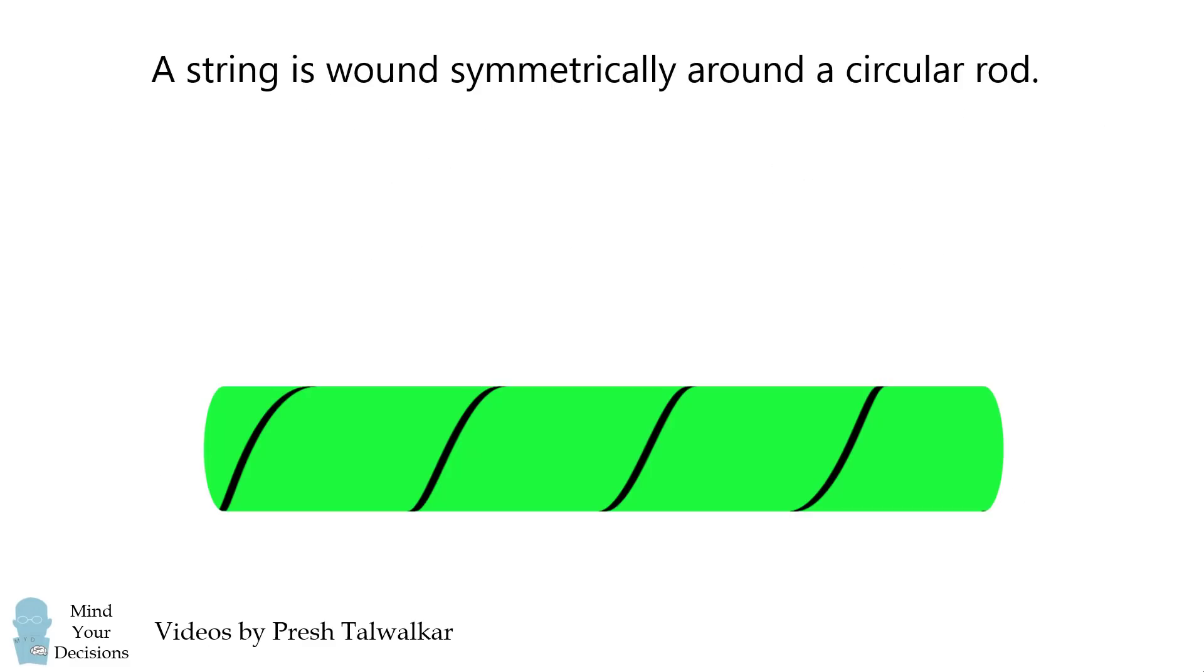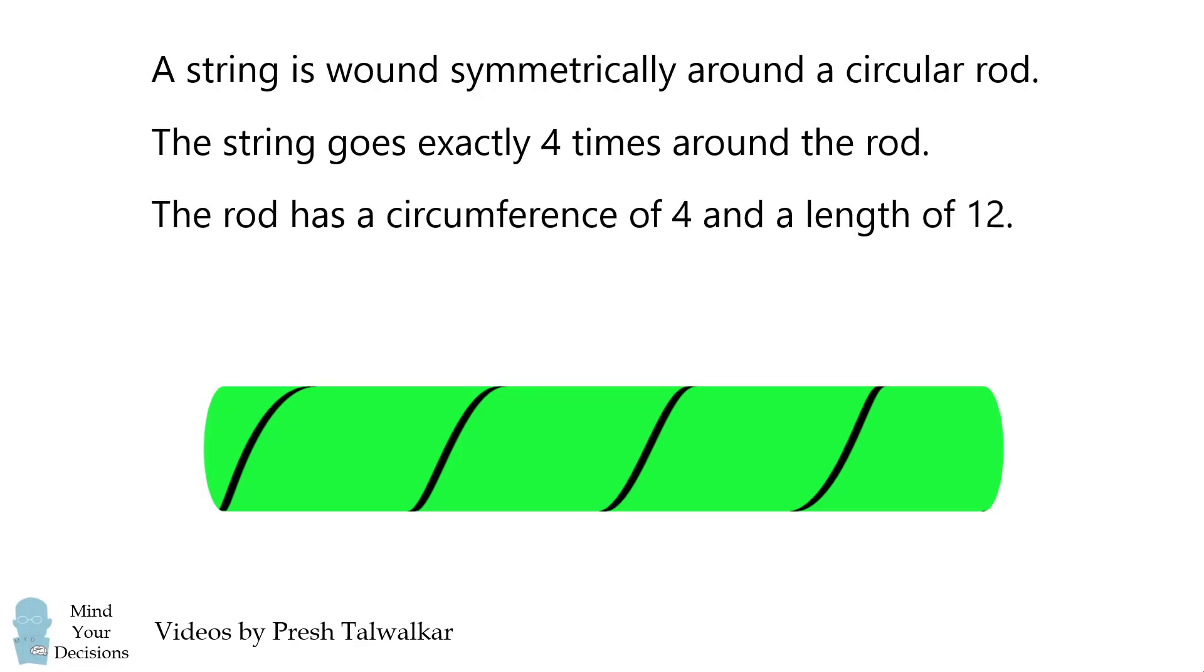A string is wound symmetrically around a circular rod. The string goes exactly four times around the rod. The rod has a circumference of 4 and a length of 12. What is the length of the string?